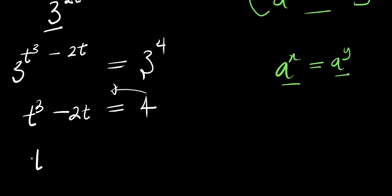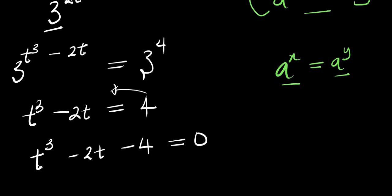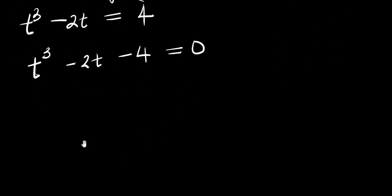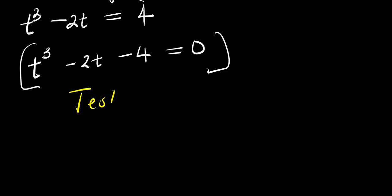So to solve this equation I need to move everything over: t³ − 2t − 4 = 0. This is a cubic equation, so let's check if there is any value of t that will satisfy this equation — we are going to do testing.